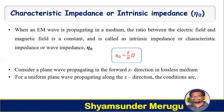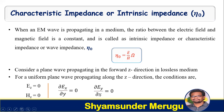For a uniform plane wave propagating along the z direction, the conditions are such that the field components along the direction of propagation will be zero, and the x and y components are independent of each other. The field components depend on z as well as time t. So along the direction of propagation, the field components ez and hz will be zero. The x component of the electric field with respect to y is zero, the y component of the electric field with respect to x is zero, and the x component of the magnetic field with respect to y is zero.